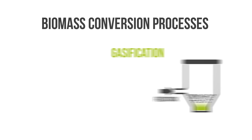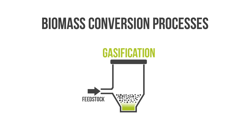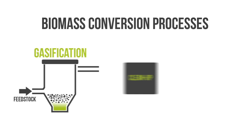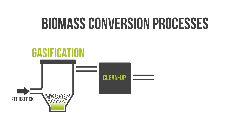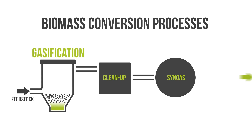Gasification is the process of using heat, pressure, and partial combustion to convert feedstock into a combustible gas mixture called syngas. The syngas can then be used in place of natural gas for heating, electricity, and other uses.